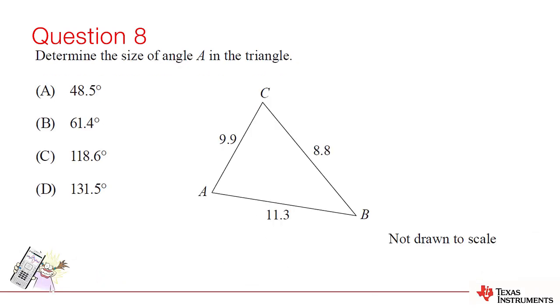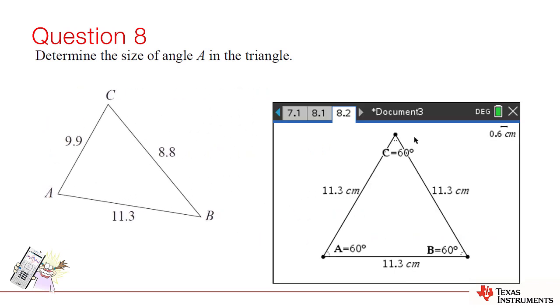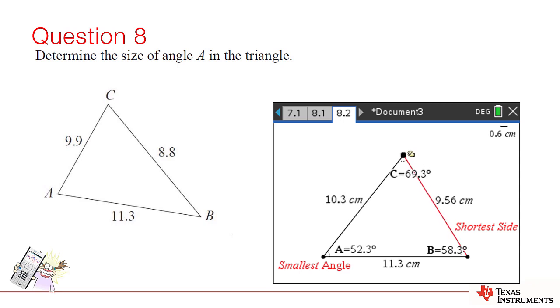Question 8. We're given three side lengths and asked for information about an angle. We cannot assume the triangle is right-angled, so the cosine rule is appropriate here. However, there's a really simple geometry fact that the shortest side in the triangle will be opposite the smallest angle. That means we don't actually need to do any calculations.